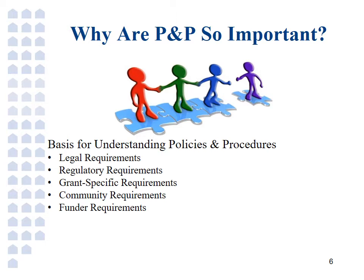Fair housing policy, for example, derives from federal regulation. Although in our case, the City of Cincinnati also has fair housing protections that go beyond those enshrined in federal law, as we will discuss later. Regulatory requirements are those put into place by federal agencies, such as HUD, that are binding upon recipients and subrecipients of federal funds, but are not the product of legislation. One example of this is that HUD recently waived certain requirements for ESG, COC, and HOPWA grants that were regulatory in nature due to the COVID-19 crisis. HUD does not have the authority to waive any legal requirements — only the appropriate legislative authority can do so.